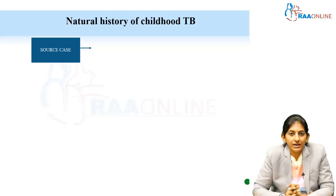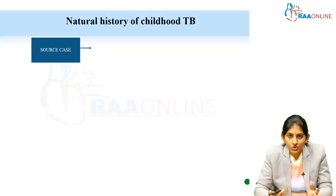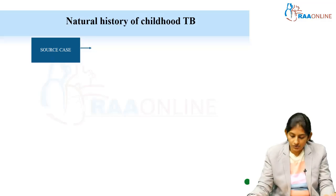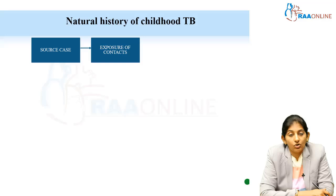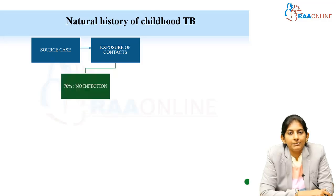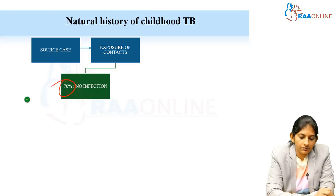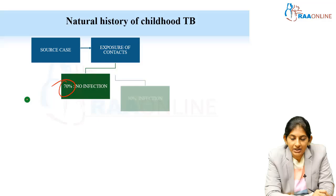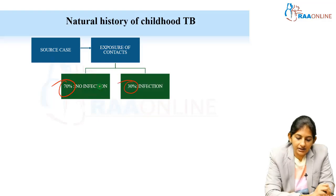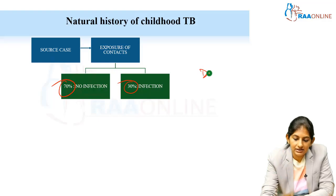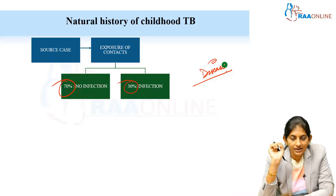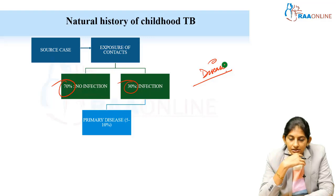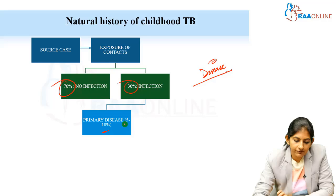Before moving on to how we are going to diagnose and the latest algorithmic approaches, just one slide about the natural history of childhood tuberculosis. For any childhood TB there will definitely be a source case. Once the child is exposed, 70 percent do not have an infection. The rest 30 percent gets infected. Note that infection is different from disease.